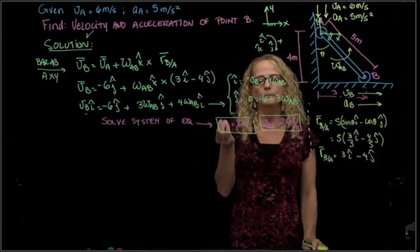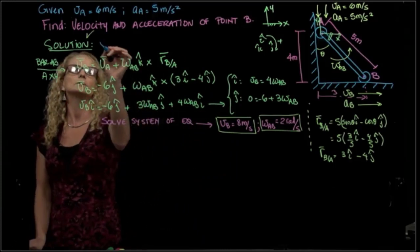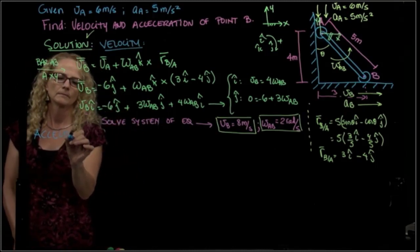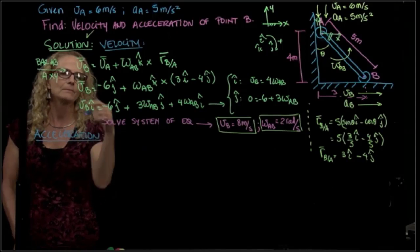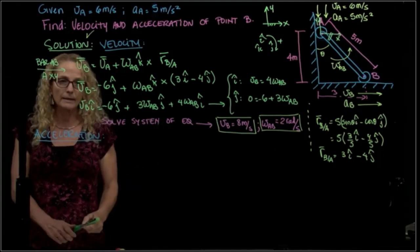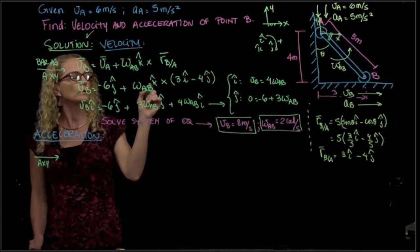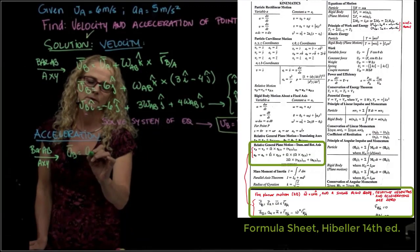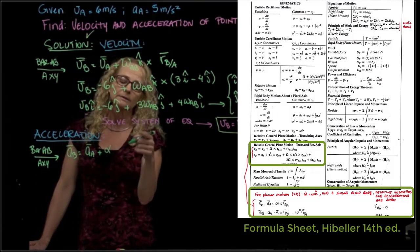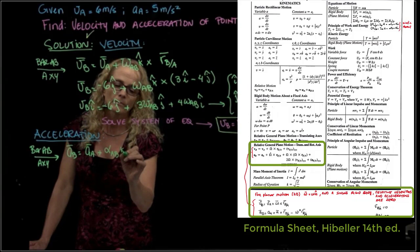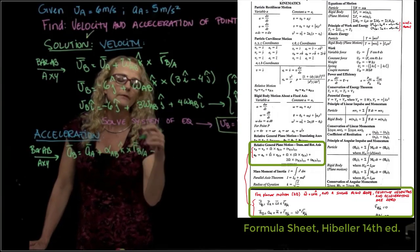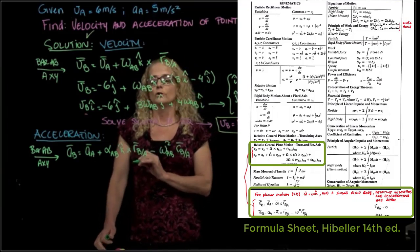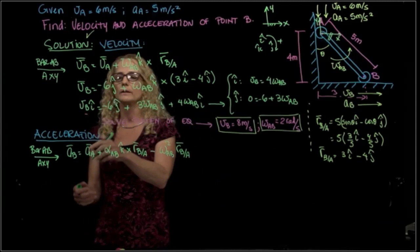We have to do exactly the same process for the acceleration. We will use a coordinate system fixed to the bar with origin in A. And we will write this equation, but for the acceleration. Acceleration of B is equal to acceleration of A, plus the angular acceleration instead of angular velocity, cross the position vector B to A. And then we have the other term. You have to learn how to use this equation. This is the equation for acceleration, and then we substitute.